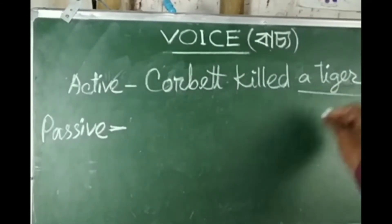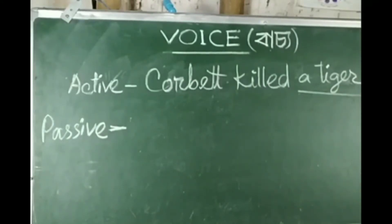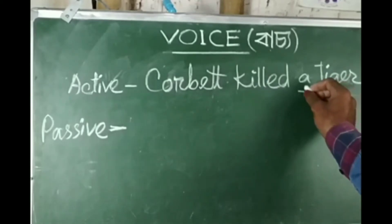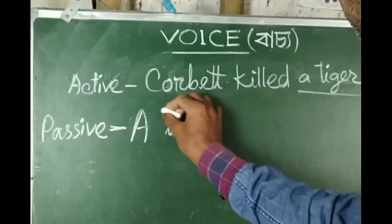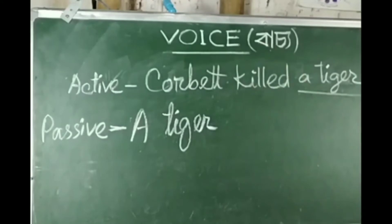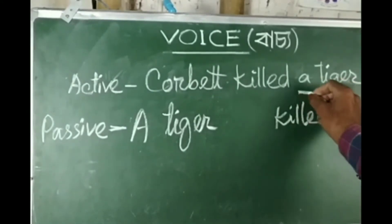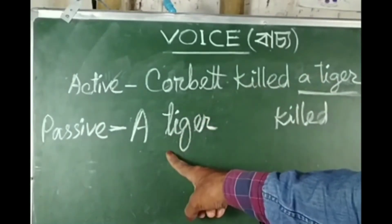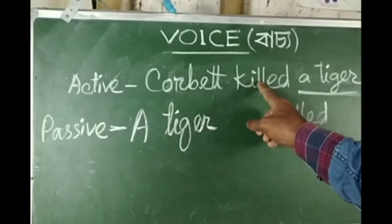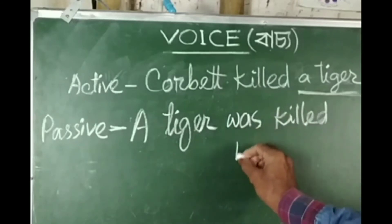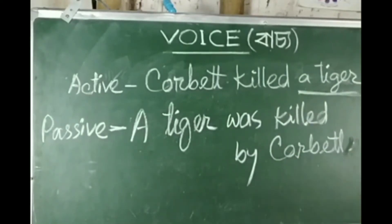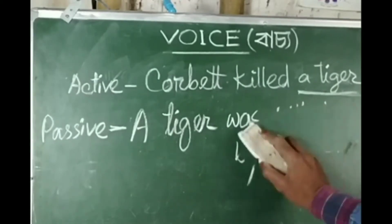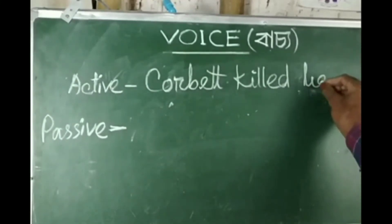Consider the sentence with 'a tiger' as the object. This type of object is singular. 'This tiger was killed by Corbett.' The object 'tiger' is moved to the subject position. The sentence in passive voice becomes: 'A tiger was killed by Corbett.'